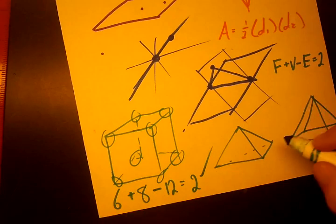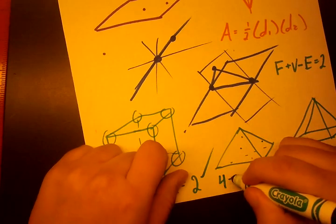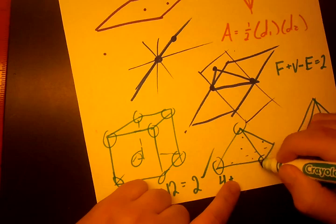On a tetrahedron, how many faces are there? 1, 2, 3, 4. Four faces. Plus how many vertices? 1, 2, 3, 4.